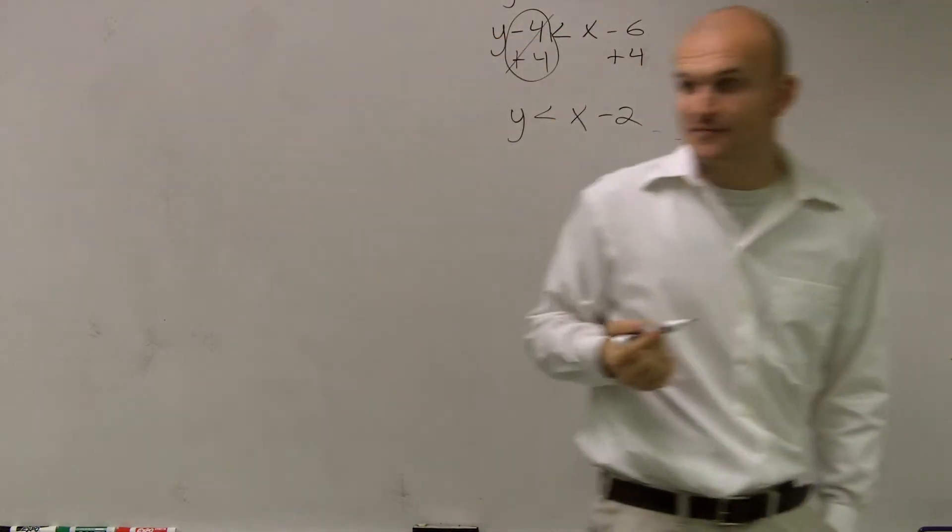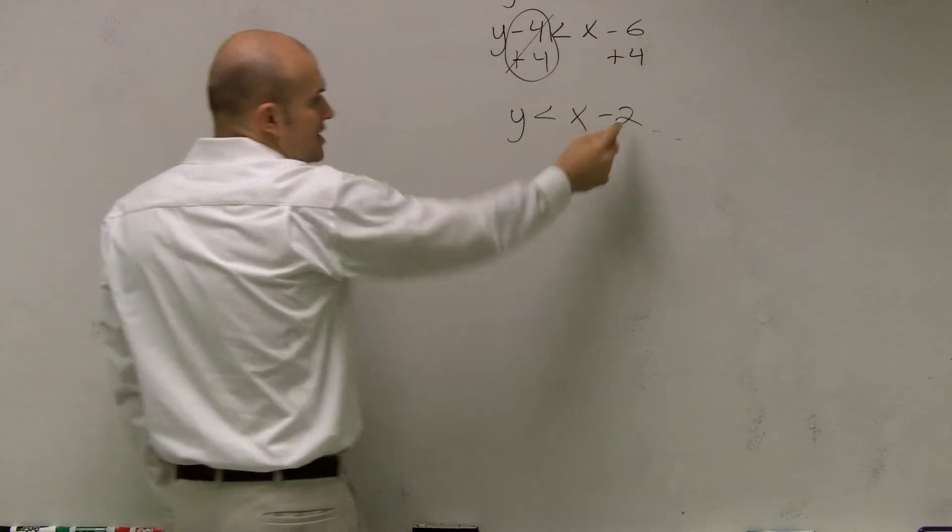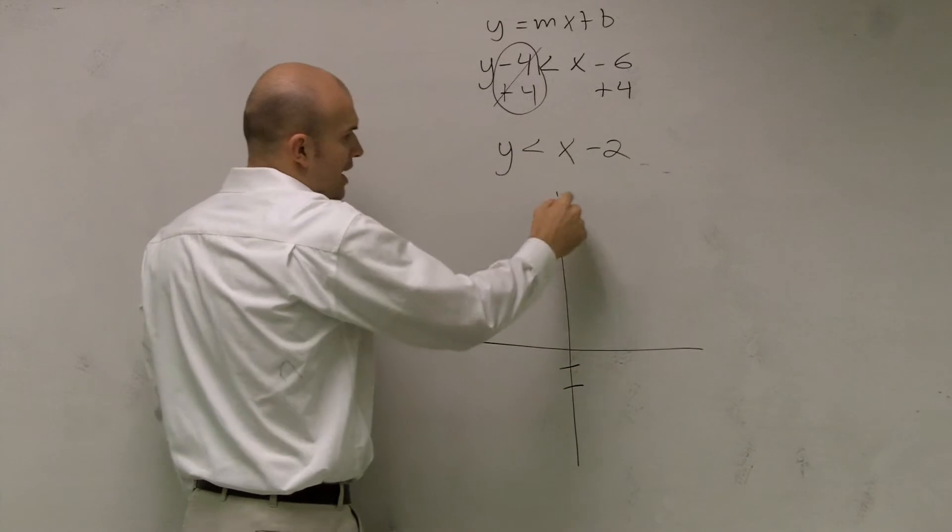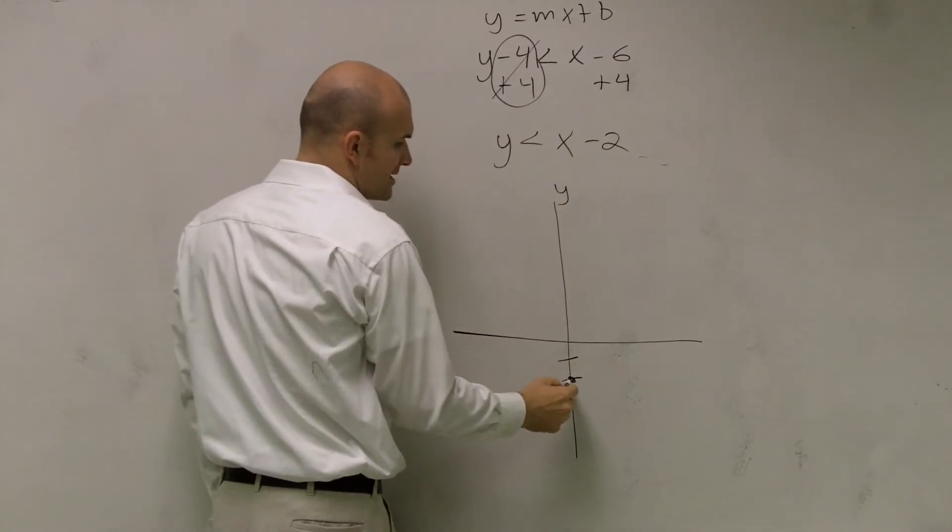So let's go ahead and graph this, and everybody should know that this is our y-intercept. So I'm going to make this point on my y-axis. I'll go down to negative 2, and I'll make a dot.